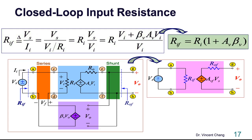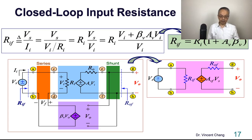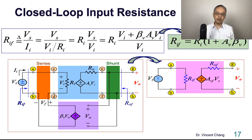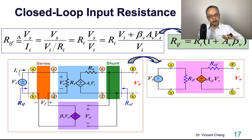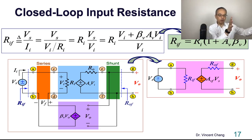This is the relationship between the open-loop resistance Ri and the closed-loop input resistance RIF. Through the series mixing, the input resistance got increased by the amount of feedback: one plus A times beta. So the equation tells us that the input resistance increases due to series mixing.